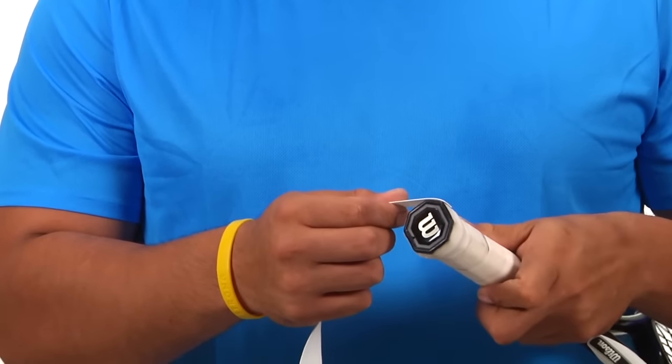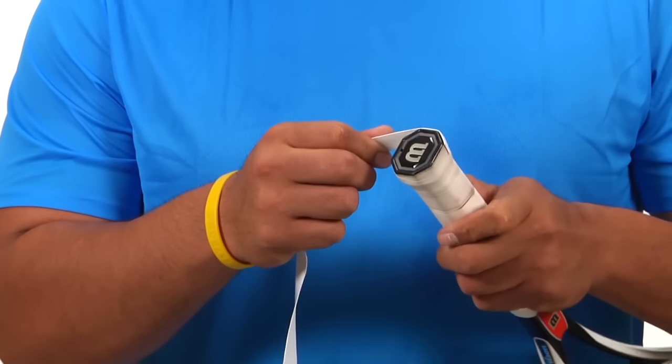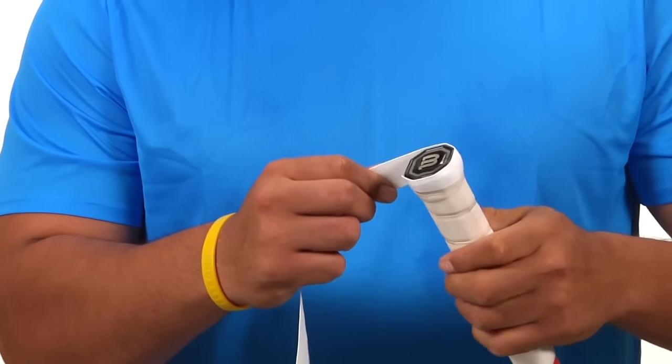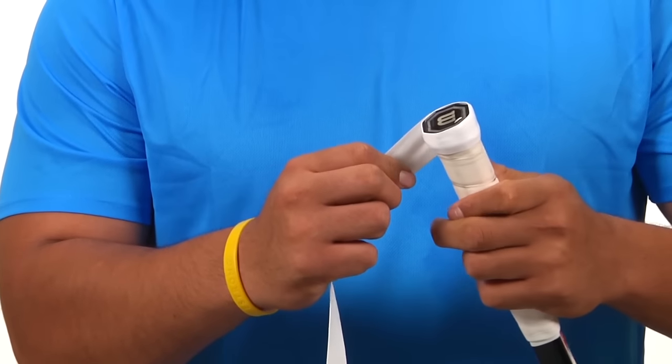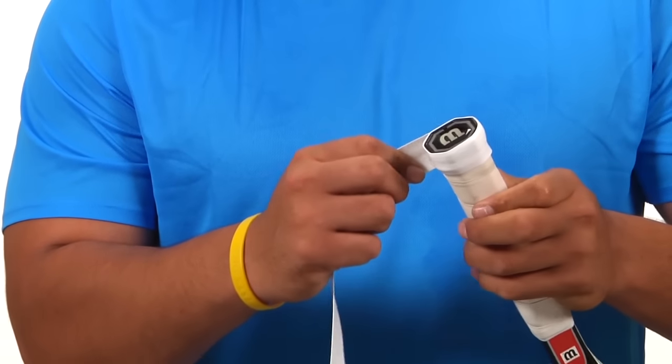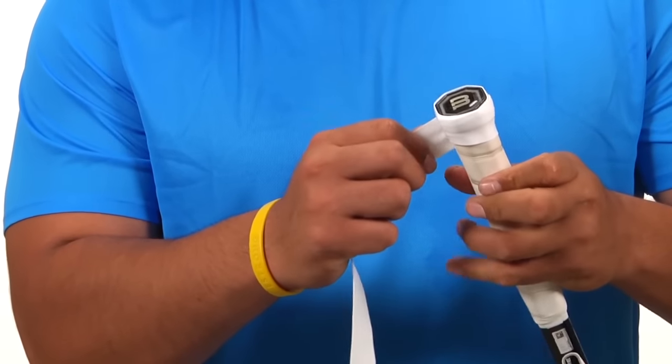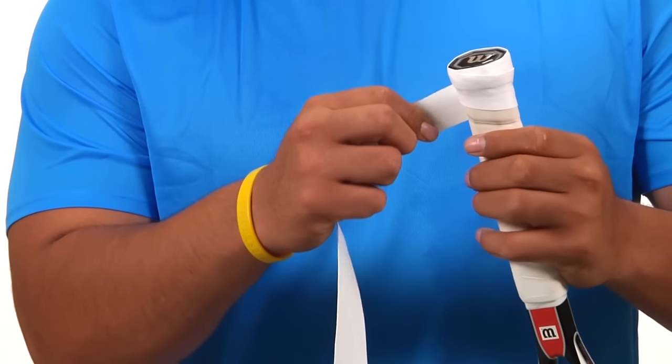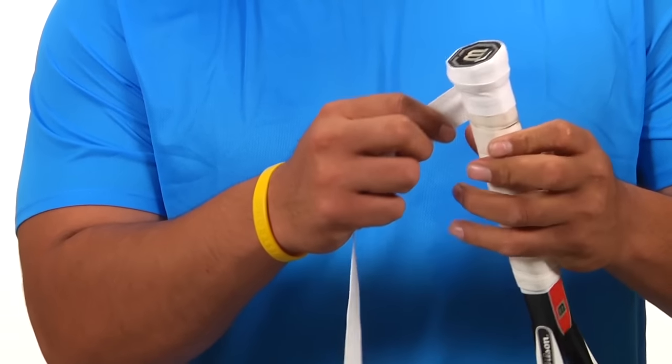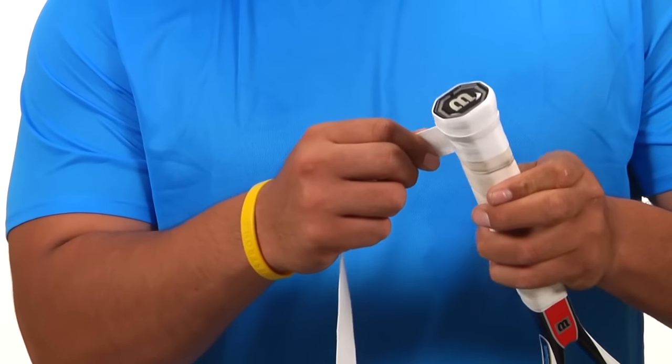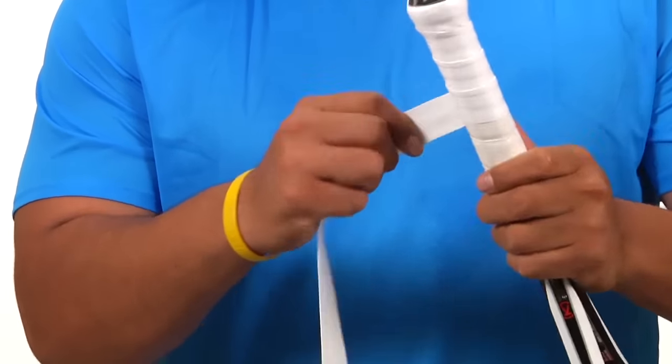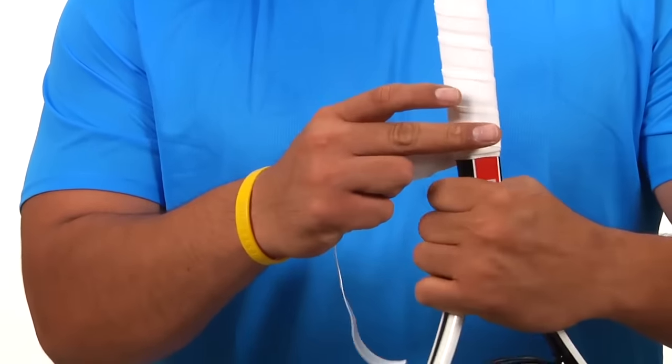Keep it nice and taut, start overlapping it about an eighth to a quarter of an inch, no more than a quarter of an inch. You're going to want to go ahead and pass the point where you cover up the whole handle.